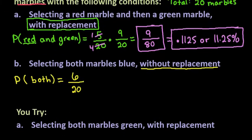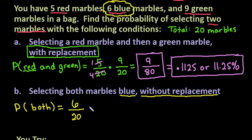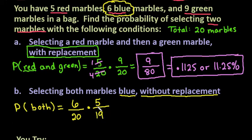So thinking about this situation: we selected a blue marble on the first draw. I had 6 blue marbles, then I took one out and it was blue. Now I only have 5 blue ones left in the bag out of a total of 19 marbles remaining. Notice that the second probability changes because it's dependent on the first one.